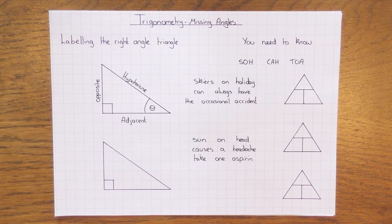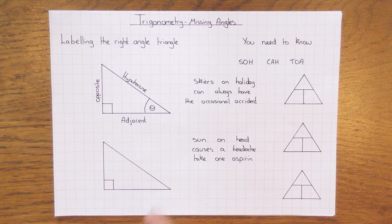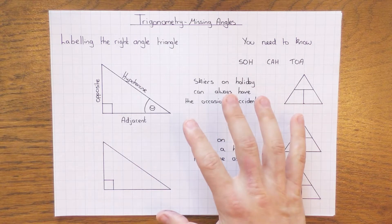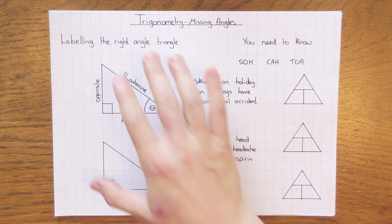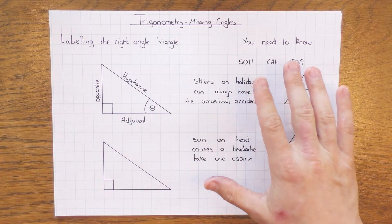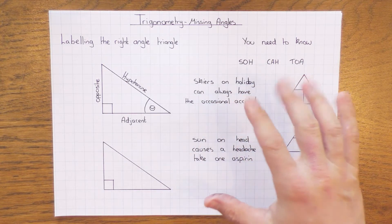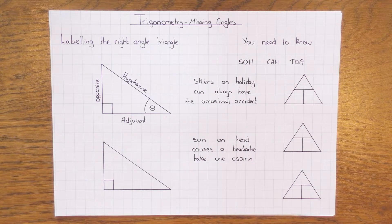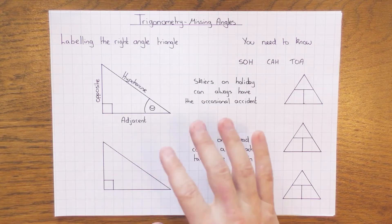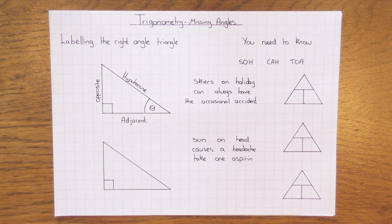Hi guys, in this video we're going to have a look at trigonometry, and in this particular case we're going to look at missing angles. If you've already seen my video on missing lengths, which is definitely the one you should have started with, you'll have seen this side already. If you're a little bit rusty or you haven't seen this before, definitely watch this, because if you get this bit wrong the whole thing is ruined and you'll get no marks. Let's get cracking.